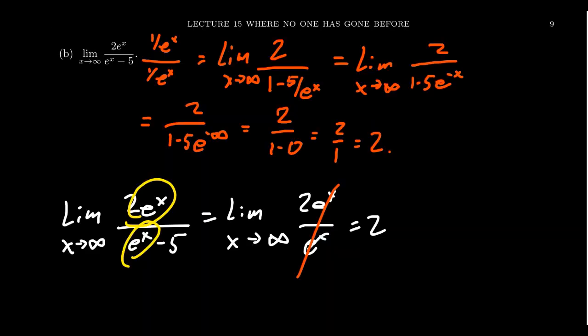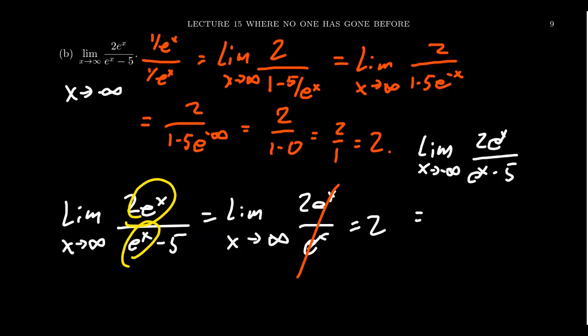It's worth noting that if we take the limit as x approaches negative infinity of 2e to the x over e to the x minus 5, things look different. Plugging in negative infinity gives 2 times e to the negative infinity over e to the negative infinity minus 5, which is 0 over 0 minus 5, giving zero. It's important to remember that with exponential functions the end behavior on the right is not the same as on the left, and functions containing exponentials will likely inherit that property.